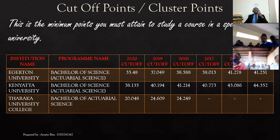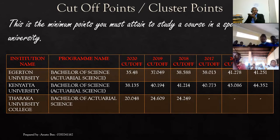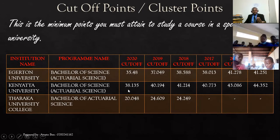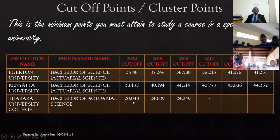Take note of this: the course is the same, the universities are different, and the points are different. At Egerton University in 2020 the cut-off was 35.48; in 2019 it was a bit higher at 37.048; in 2018 it was even higher at 38.5; and in 2017 it was 38.03. At Kenyatta University, it was 38.13 in 2020, 40.19 in 2019, and 41.218 in 2018. At Dedan Kimathi University College: 2020 was 20.04, 2019 was 24.6, and 2018 was 24.9.